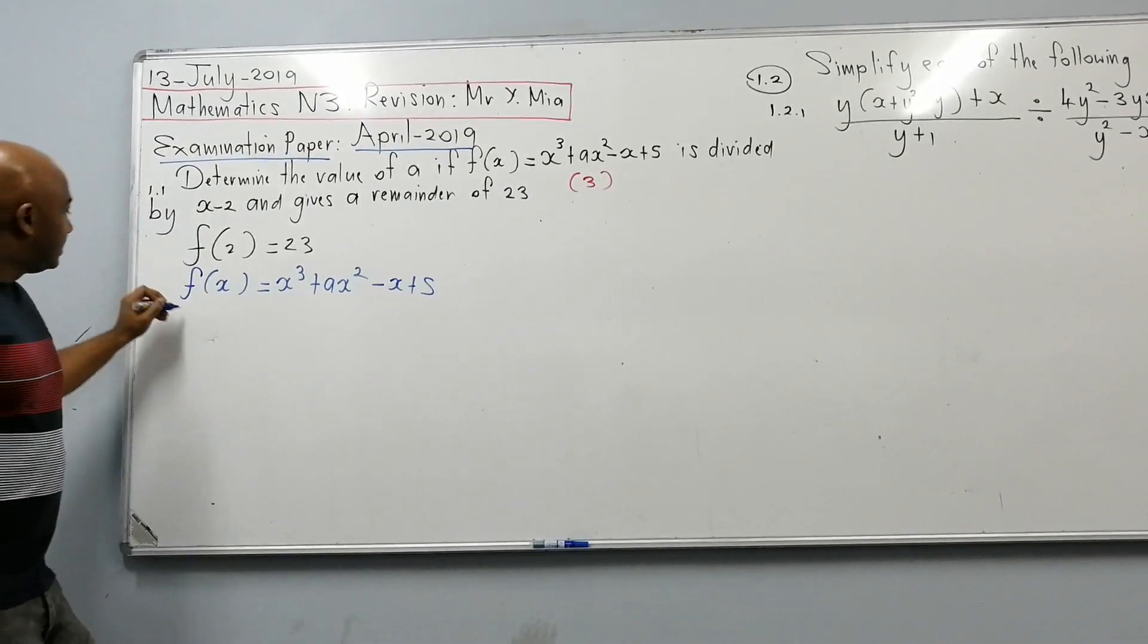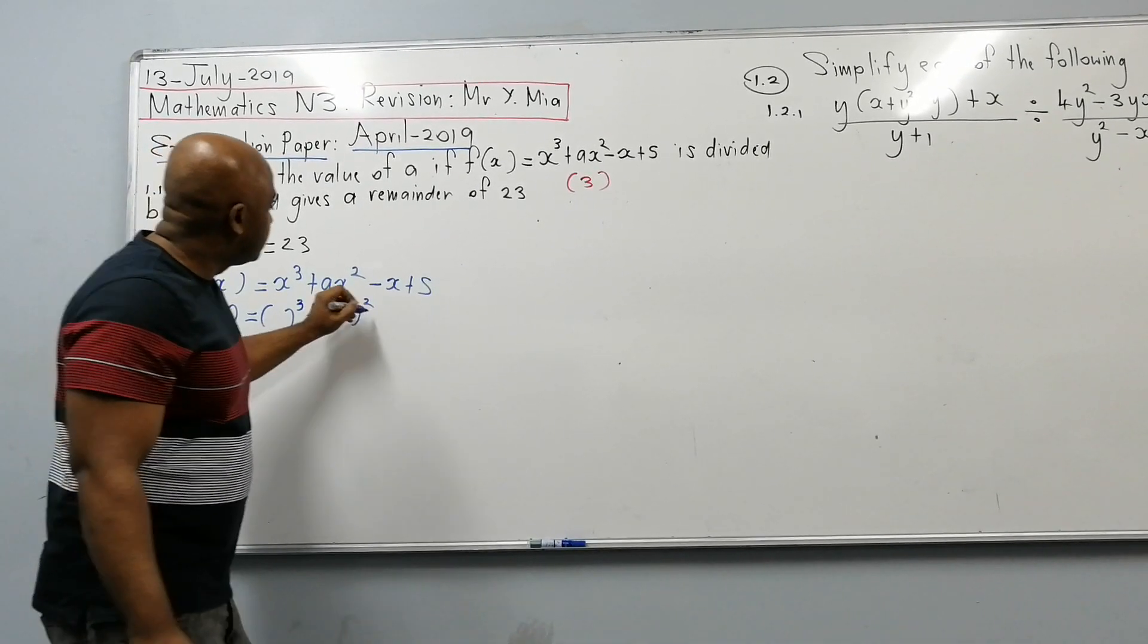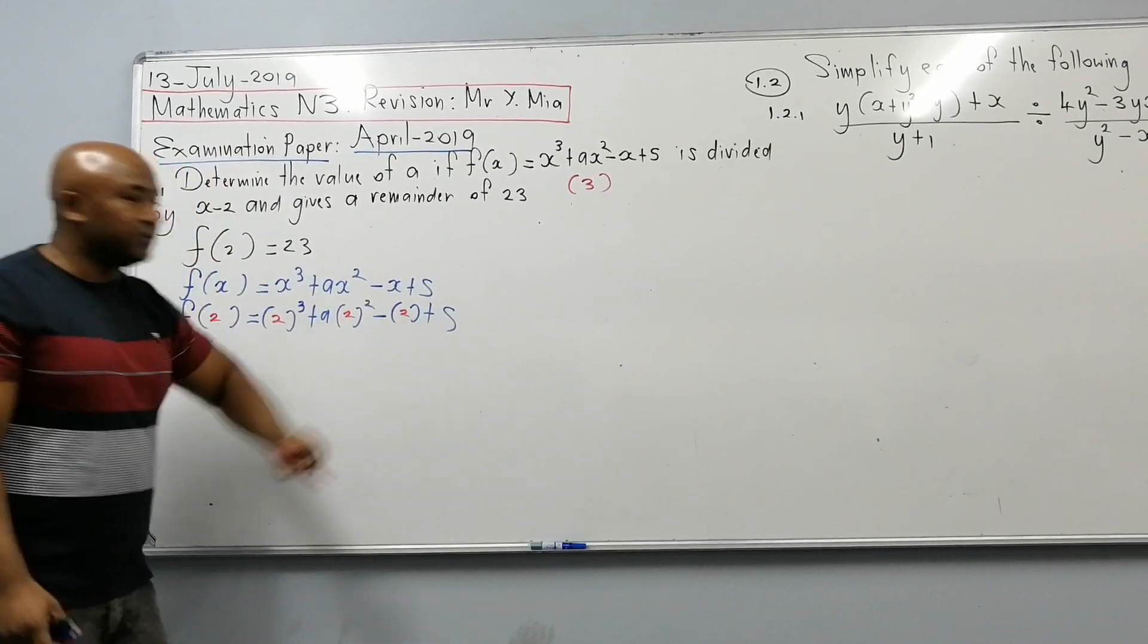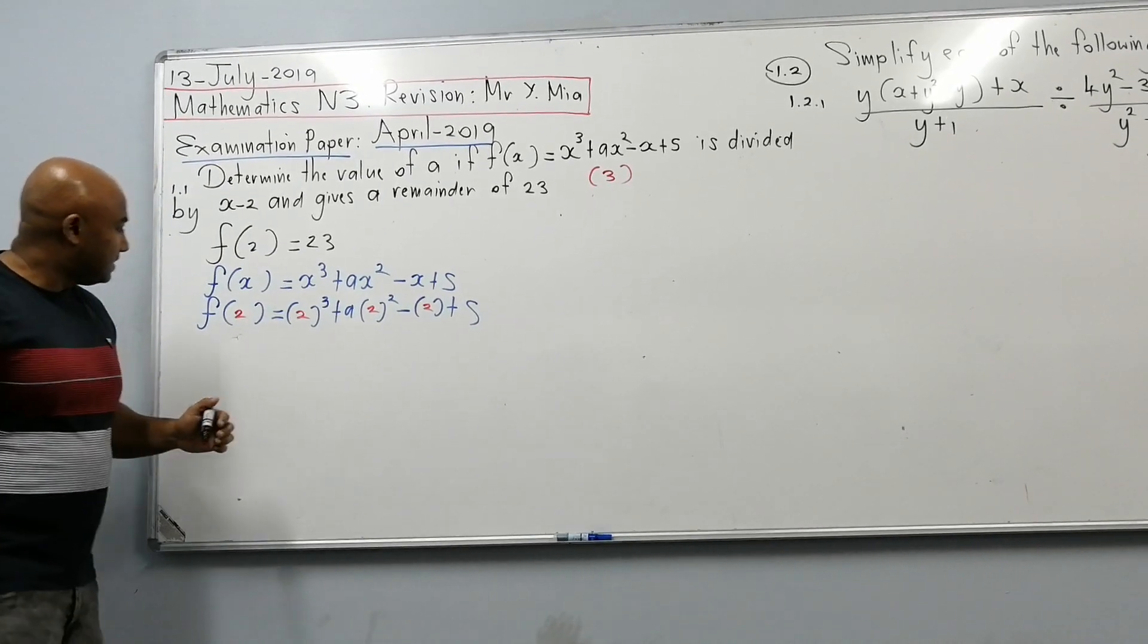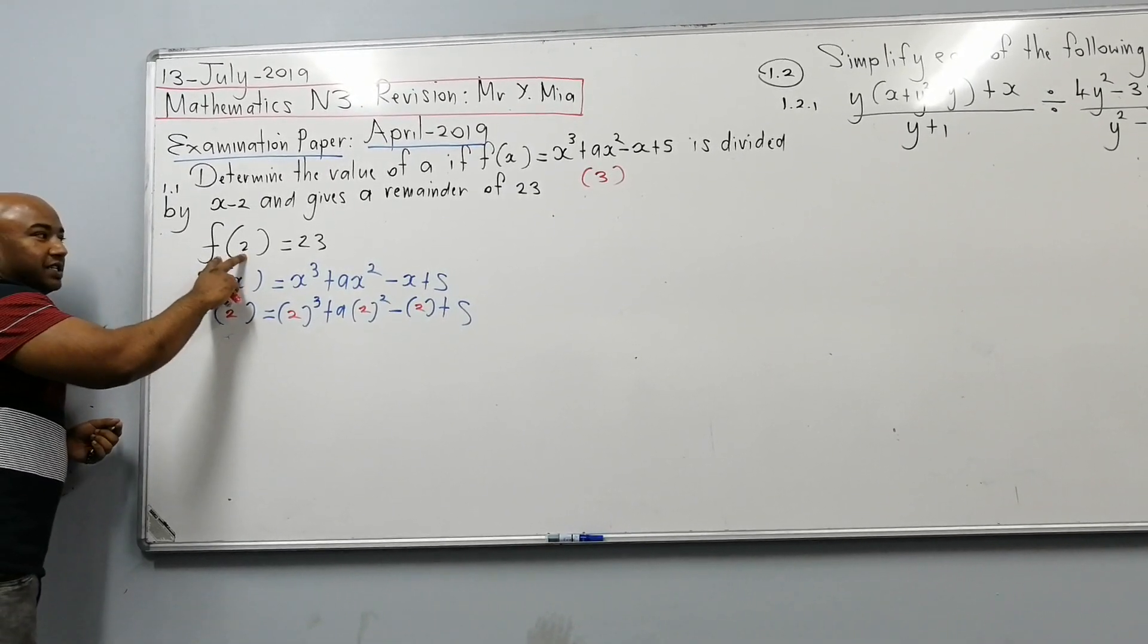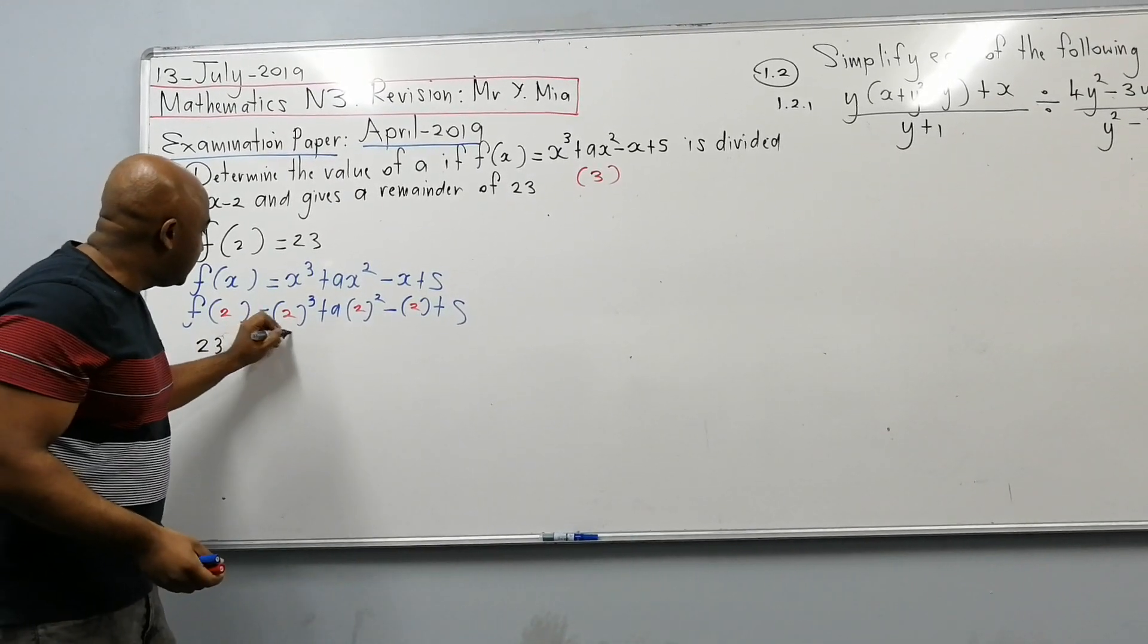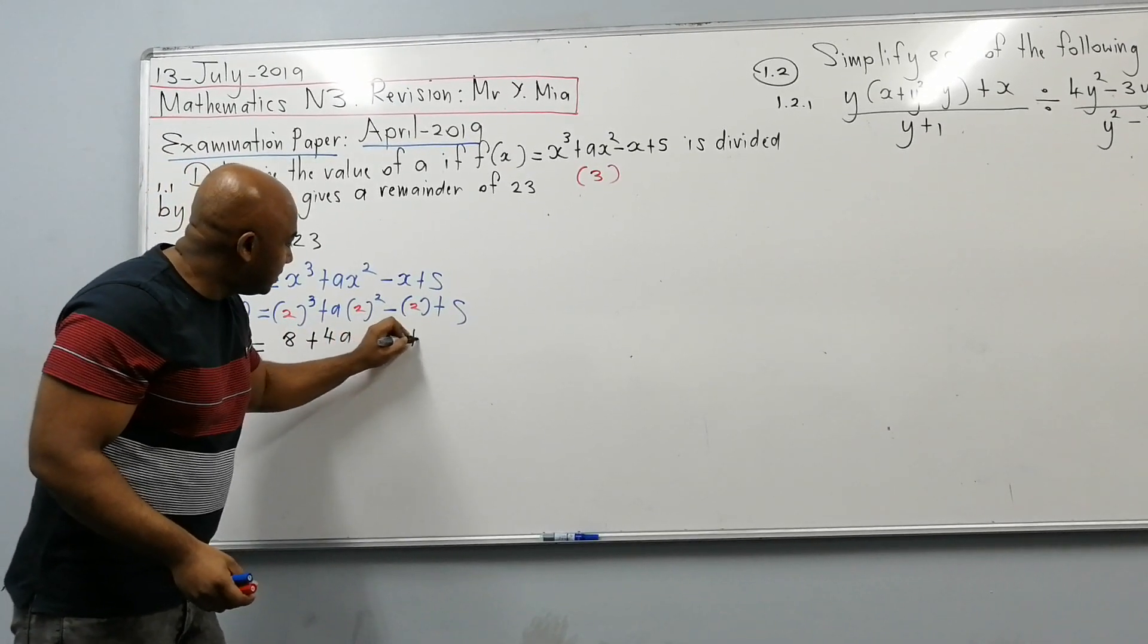So we have f of x is equal to x cubed plus ax squared minus x plus 5. So now I can substitute by 2. So where if I see x, I'm putting 2 there, so that's a 2, 2, 2 and 2. So now, on the left hand side of this equation, I have f of 2. I can replace f of 2 with 23. On the right hand side, 2 to the power of 3, a is 2 squared, that would be 4a there minus 2 plus 5.